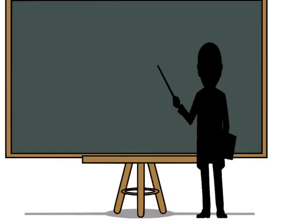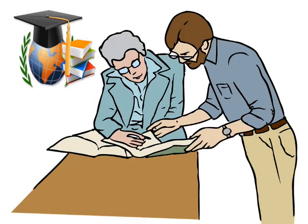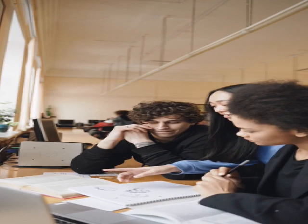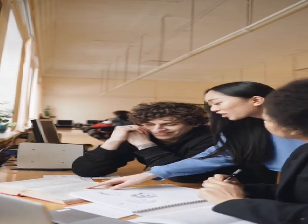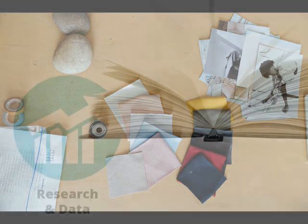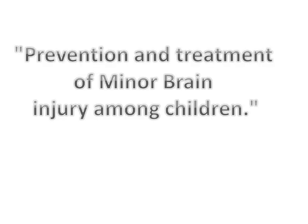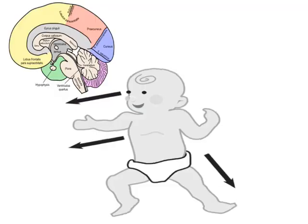First, choose a topic. Make sure your topic meets the assignment requirement and is a topic you are interested in. Selecting a topic that is interesting to you will make your writing fast and fun filled. Let's assume your professor gave you an assignment on the rising cases of brain injury. We can formulate an easy-to-understand topic — for this tutorial: prevention and treatment of minor brain injury among children.